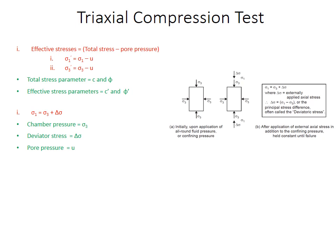The deviator stress is delta sigma. The chamber pressure or the stress applied inside the cell is sigma 3, and when you add these two you will get sigma 1, the major principal stress.